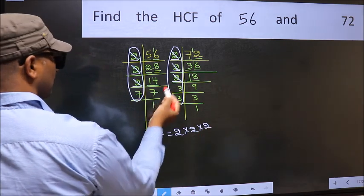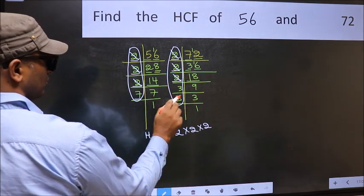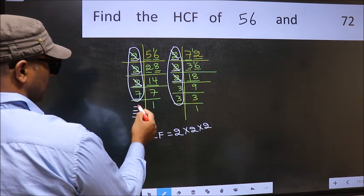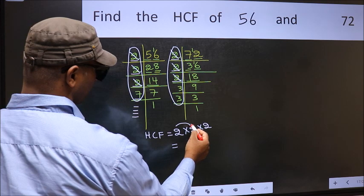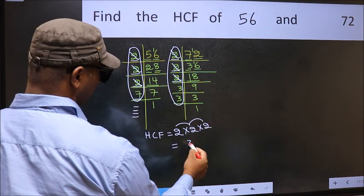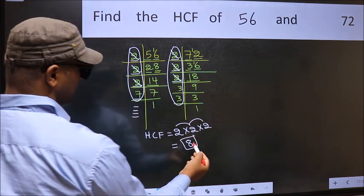Next number 7. Do we have 7 here? No. No more numbers have been left out. So our HCF is 2×2=4, 4×2=8 is our HCF.